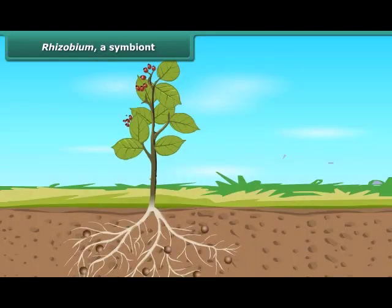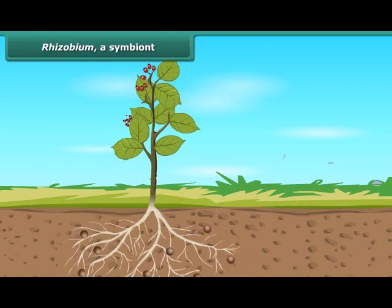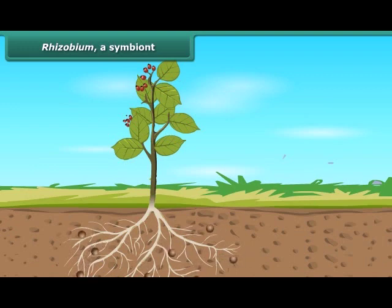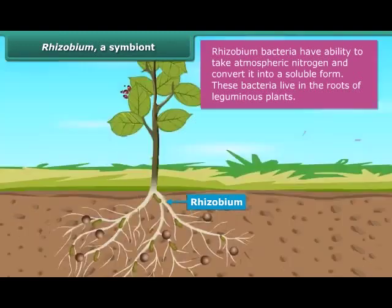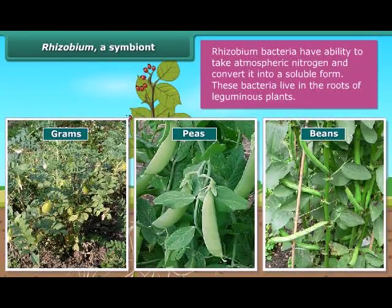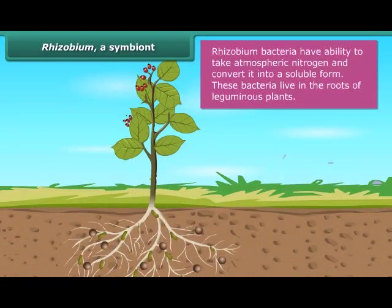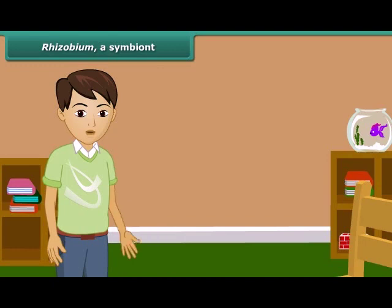Like us, plants also require a lot of nitrogen to make proteins. They absorb nitrogen continuously from the soil, due to which the amount of nitrogen in the soil becomes deficient. There is 78% nitrogen in our atmosphere, but plants cannot use it directly as they can use carbon dioxide. They require nitrogen in soluble form. The bacterium called Rhizobium can take atmospheric nitrogen and convert it into a soluble form. These bacteria live in the roots of gram, beans, moong beans, and other legumes and provide them with nitrogen. In return, the plants provide food and shelter to the bacteria. Thus, Rhizobium shows a symbiotic relationship.